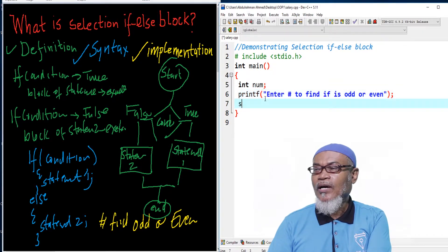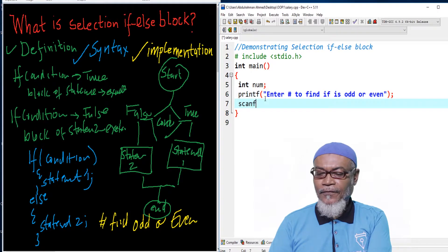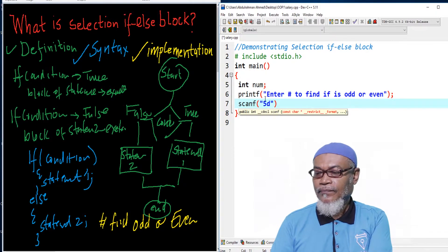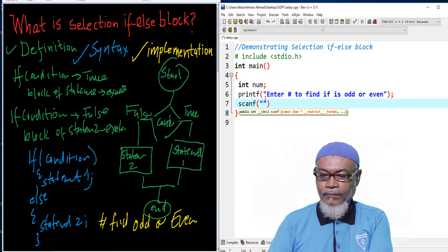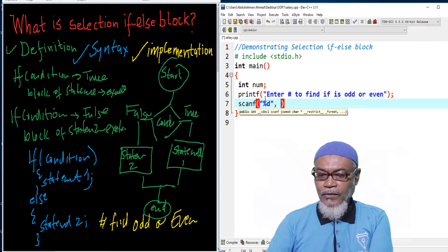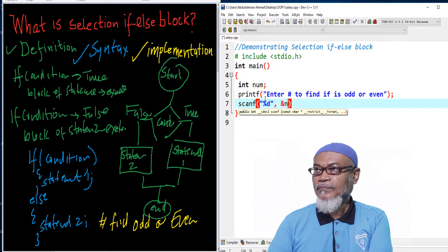Second step: you're going to capture that number using scanf. Since it is an integer, we are using %d, and we're capturing the address using an ampersand num.